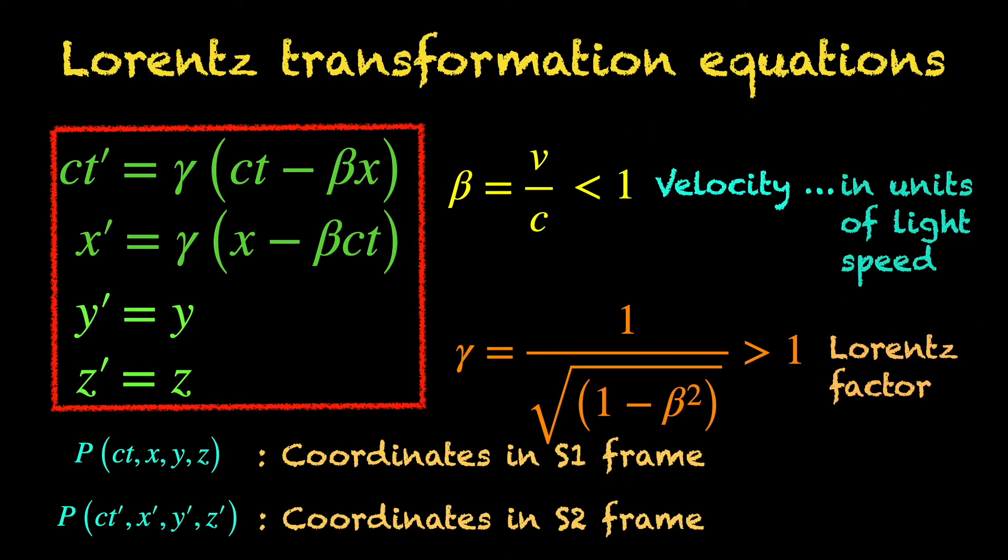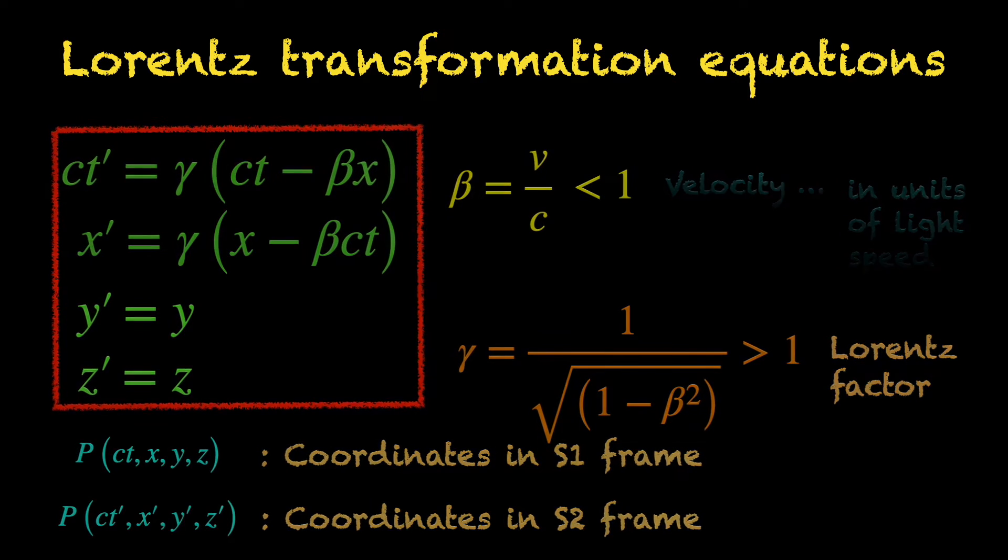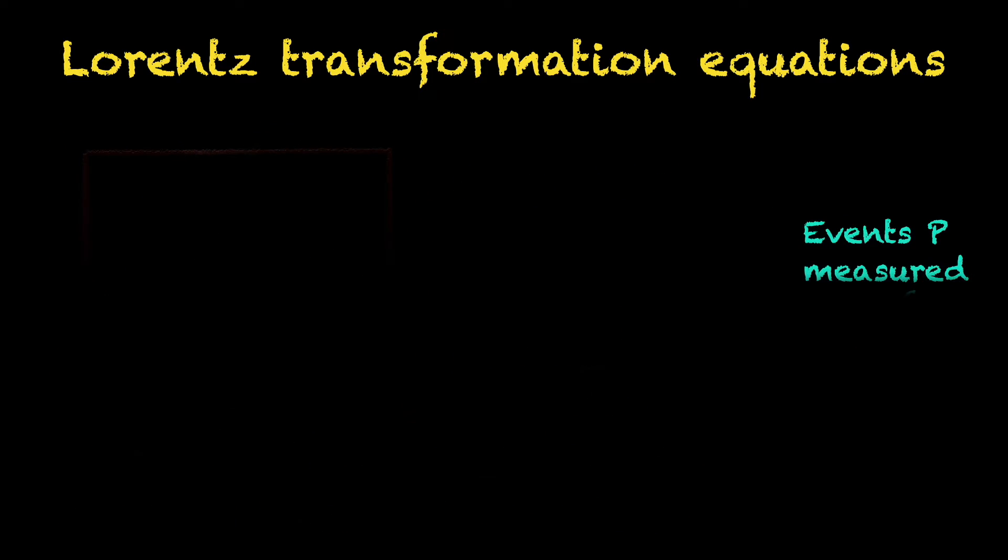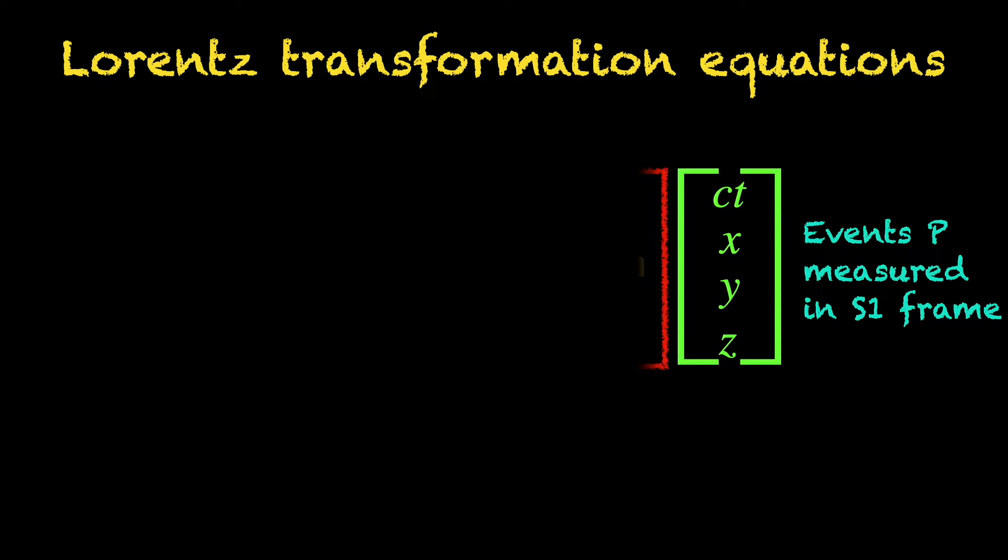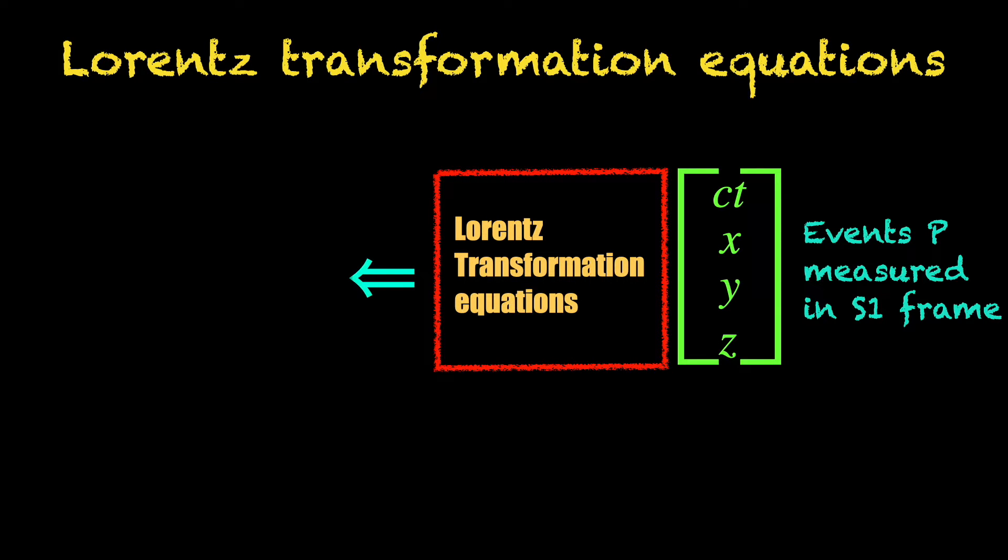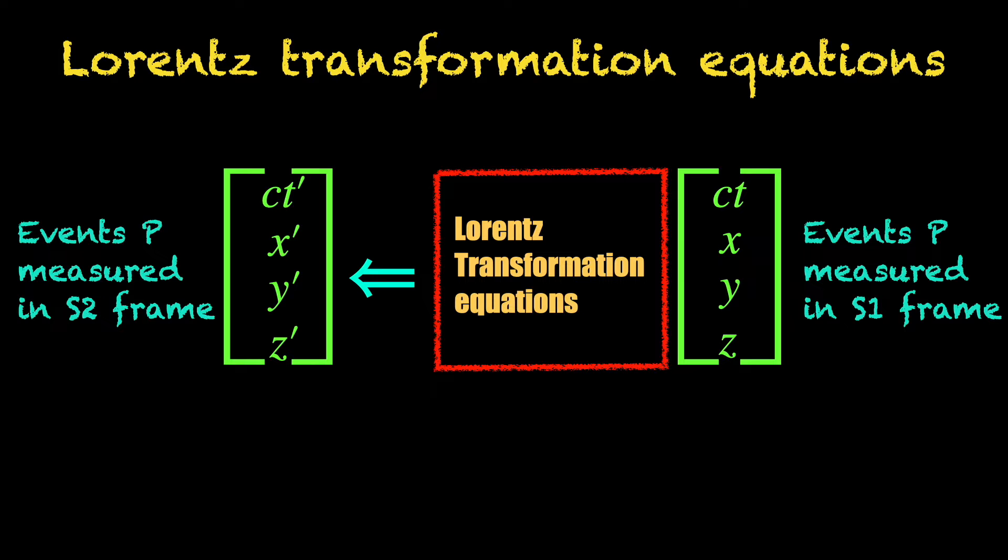Physically, what these equations mean is, if an observer in S1 frame has measured the spacetime coordinates of the event p to be the unprimed x, y, z and ct, then using them in the Lorentz transformation equations, he can calculate what the spacetime coordinates of the event p would be if measured by the observers in S2 frame. We have denoted them as the primed x, y, z and ct.